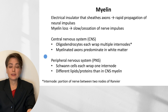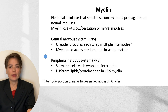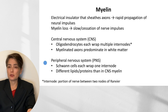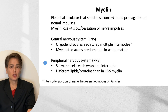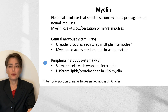In the peripheral nervous system, it's not oligodendrocytes, but Schwann cells that generate myelin, and each Schwann cell will wrap just one internode. The myelin is very similar between the central nervous system and the peripheral nervous system, but there is a difference in some of the lipids and proteins. It's been observed that disorders of myelin that affect the central nervous system typically spare the peripheral nervous system and vice versa.